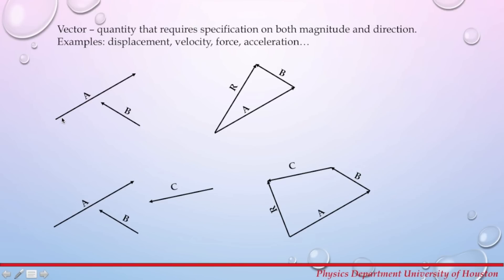A vector is a straight line with an arrowhead on the end. The length of this line represents the magnitude of the vector, while the arrowhead represents the direction. If you have vector A and vector B and wish to add them together, you can move them around by translation, either this way or this way, but you cannot rotate them.